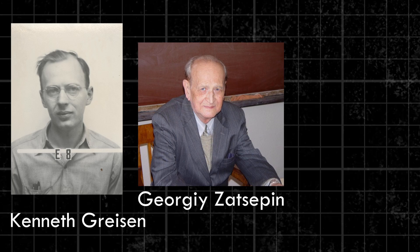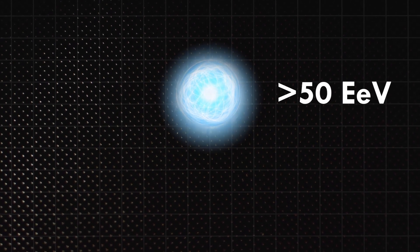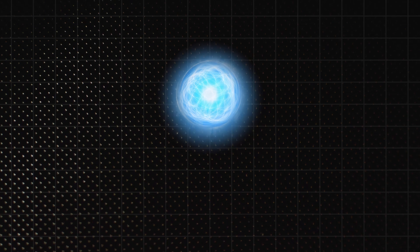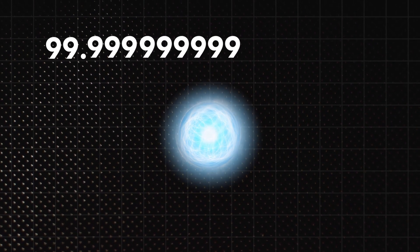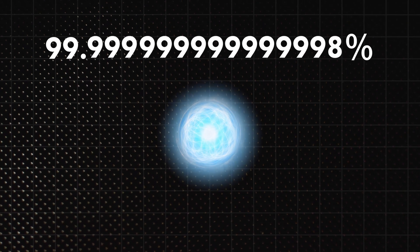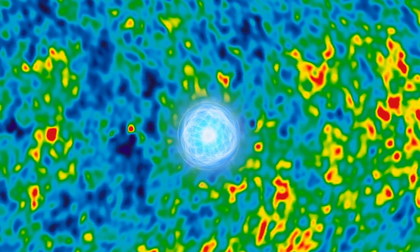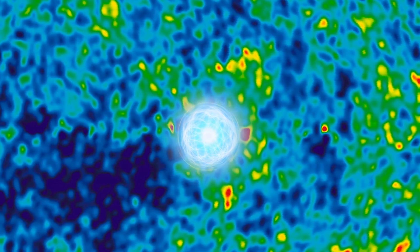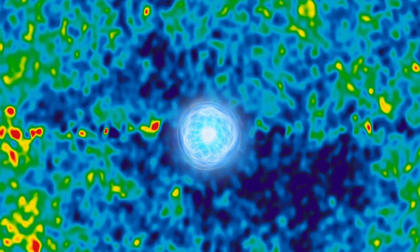Kenneth Greisen, Gregory Zatsepin, and Vadim Kuzmin calculated in the 1960s that any particle with an energy greater than 50 exaelectron volts, or roughly the energy of a proton traveling at 99.999999999999999998 percent of the speed of light, should interact with microwave background radiation over long distances. Over this time period, this should act as a slowing force on the particle.